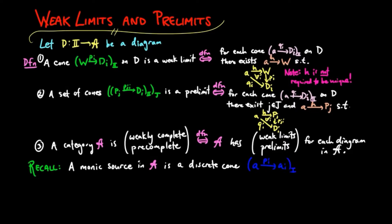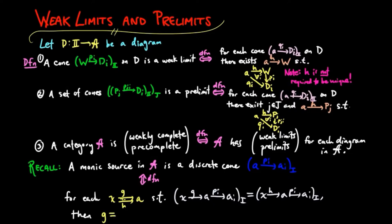We recall that a monic source is a discrete cone PI such that for each parallel pair of morphisms G and H, if PI G is equal to PIH for each I, then G is equal to H.